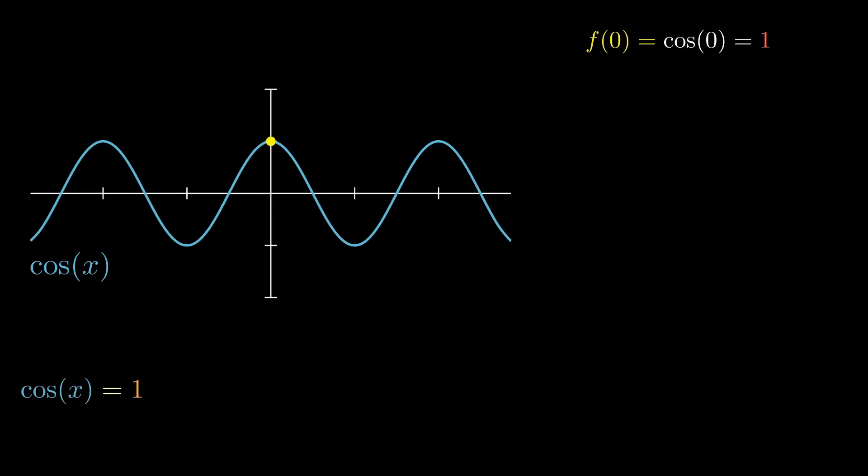The second term will just be the f prime of zero, which is just negative sine of zero. Negative sine is the derivative of cosine. It goes away, of course. And hopefully you notice that there's going to be that same exact pattern with the sine terms of the derivatives being completely erased due to the fact that sine of zero is zero.